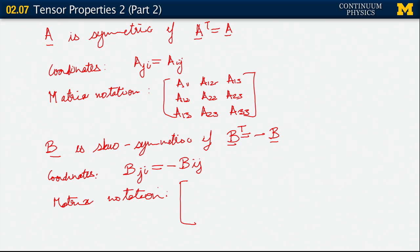The answer is given by just looking at this and asking yourself what happens if j equals i. If j equals i, we have things like B_ii equals minus B_ii. But that's possible only if that component is zero. So the diagonal components of a skew symmetric tensor are zero.